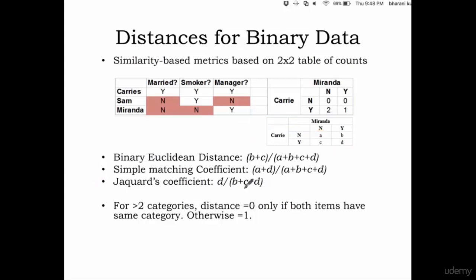So the formula is D by B plus C plus D. So two people being dissimilar is actually removed from the calculation. And if you want to calculate the distance, Jaccard's coefficient using that, it is D by B plus C plus D. D is 1. So it is 1 upon B plus C plus D, which is 0 plus 2 plus 1, which is once again equal to 1 by 3, which is 0.33.